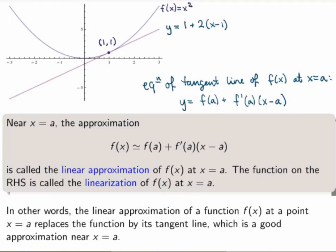So we call that a linear approximation. More precisely, we say that the linear approximation of a function f(x) at x equals a is the idea of replacing the function by the equation of its tangent line at x equals a. And the function on the right hand side here which gives the tangent line we call the linearization of our function f(x). So that's a pretty simple idea.